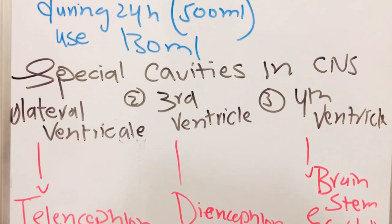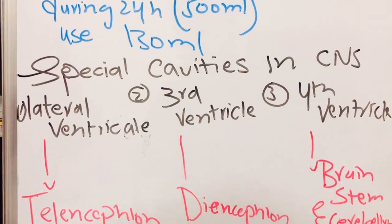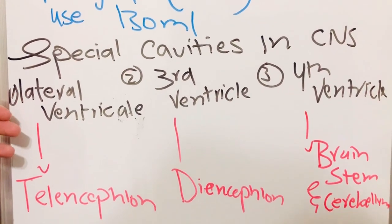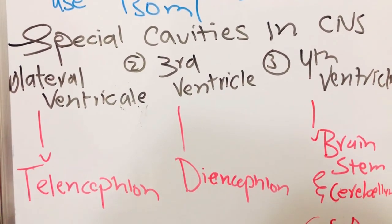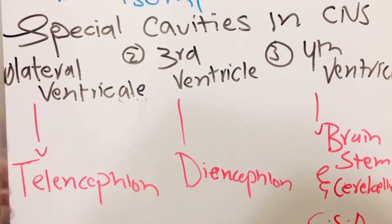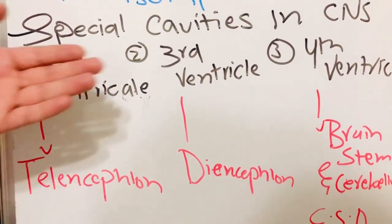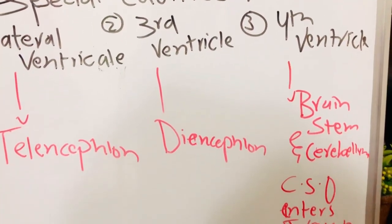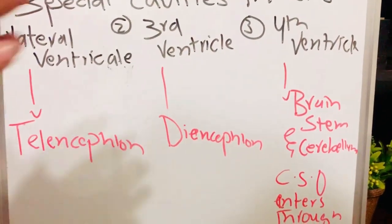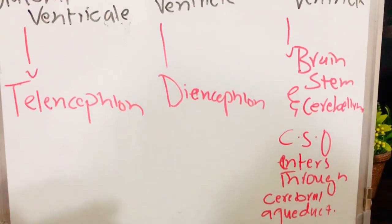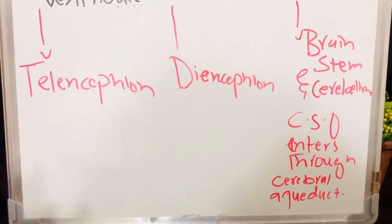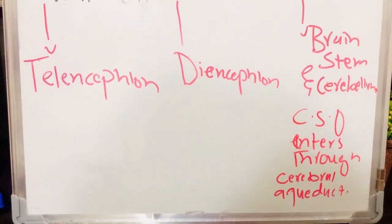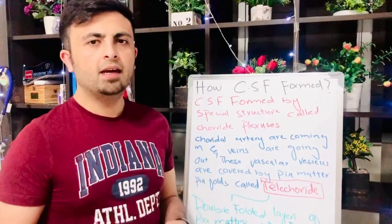We have special cavities in the central nervous system through which the cerebrospinal fluid moves. First we have our lateral ventricle, which is part of the telencephalon. Second is our third ventricle, which is part of our diencephalon, and the fourth ventricle is in the brainstem. The cerebrospinal fluid enters through the duct which is called the cerebral aqueduct.